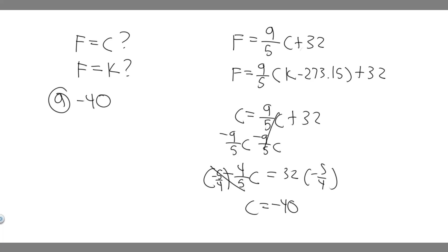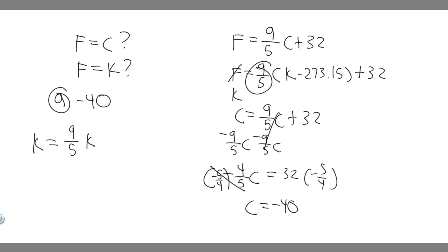Now let's do part B: at what temperature do the Fahrenheit and Kelvin scales have the same value? Just as we plugged in C for part A, we're going to plug in K for F. So: K = 9/5 · K minus 273.15 plus 32. Multiplying out 9/5 times minus 273.15 gives minus 491.67. So we have K = 9/5 · K − 491.67 + 32.